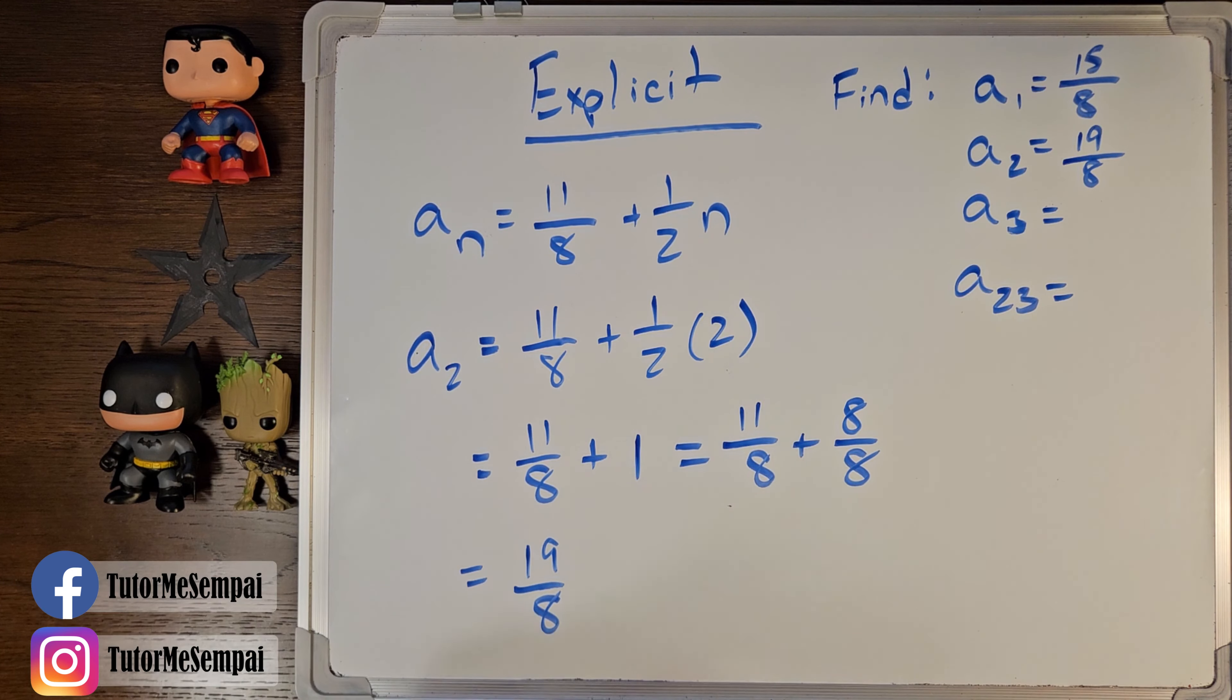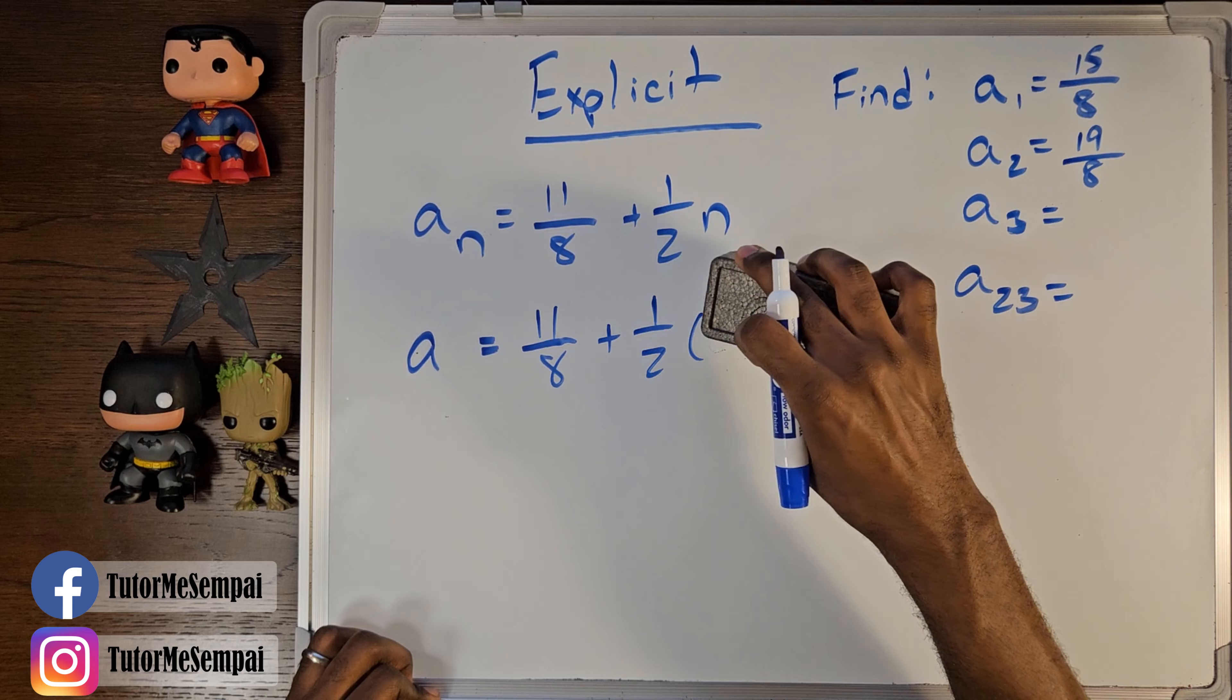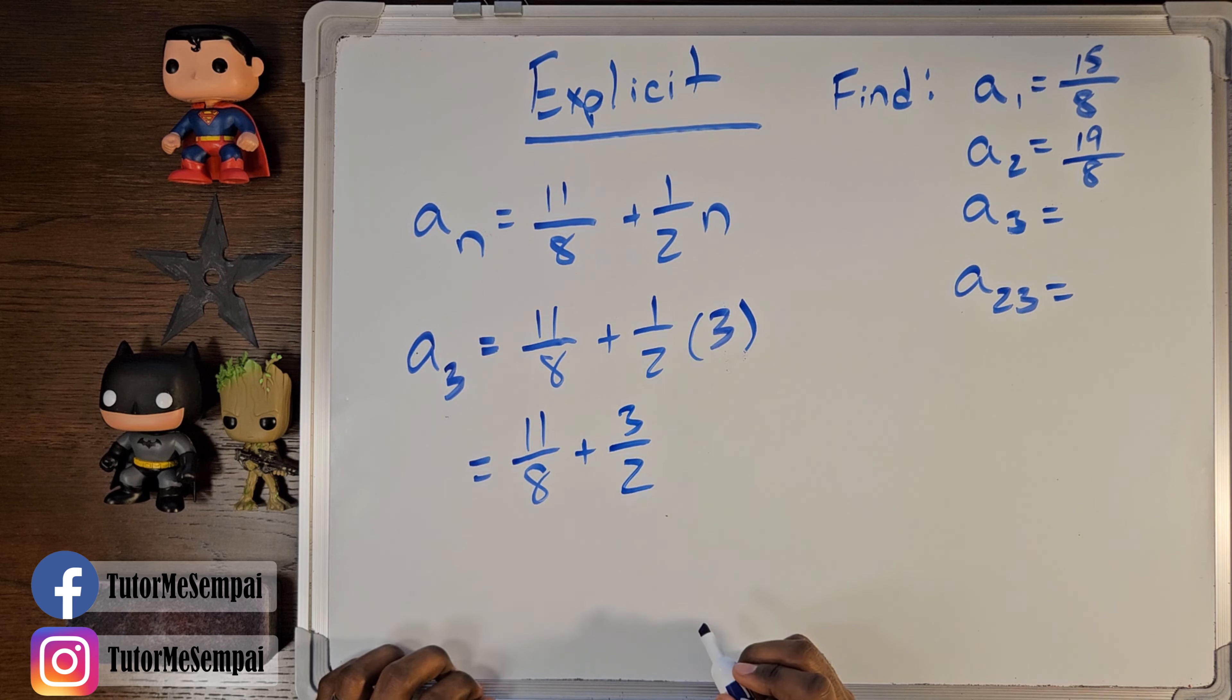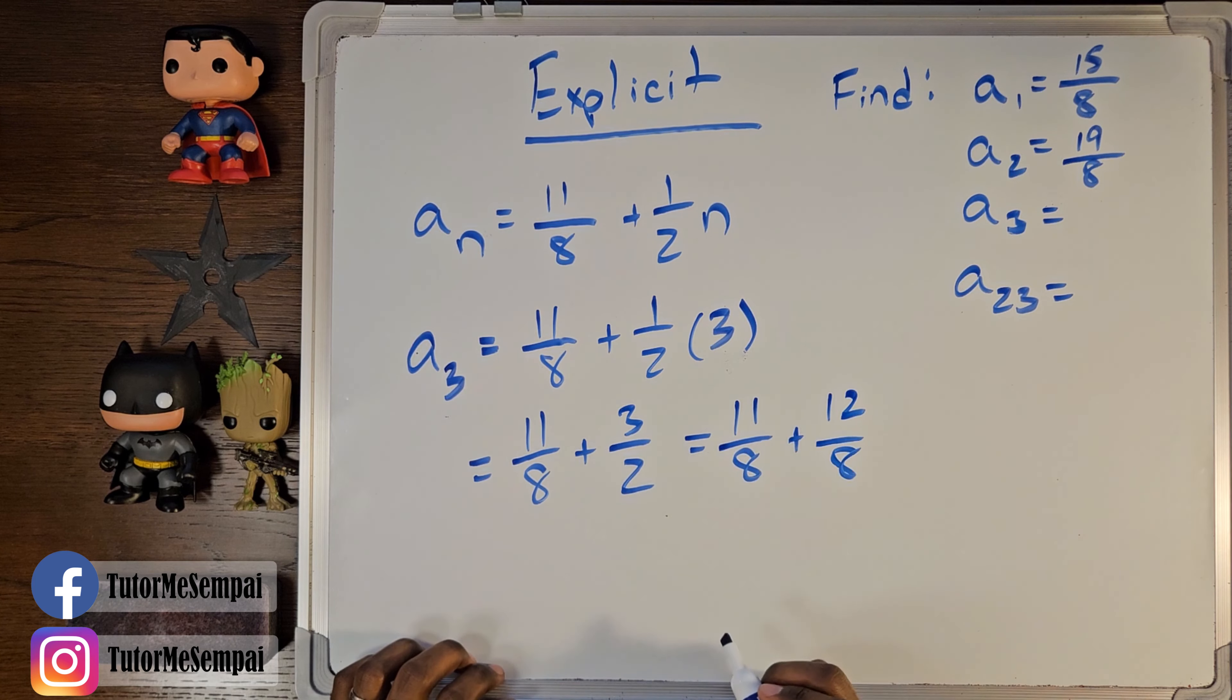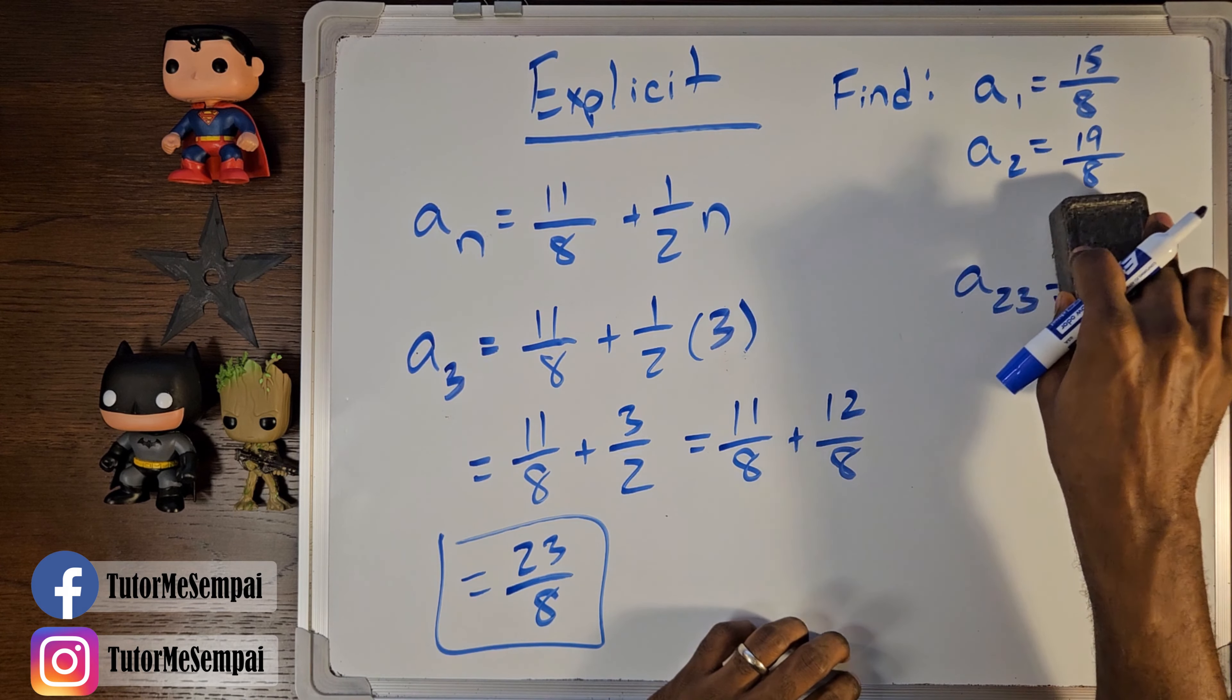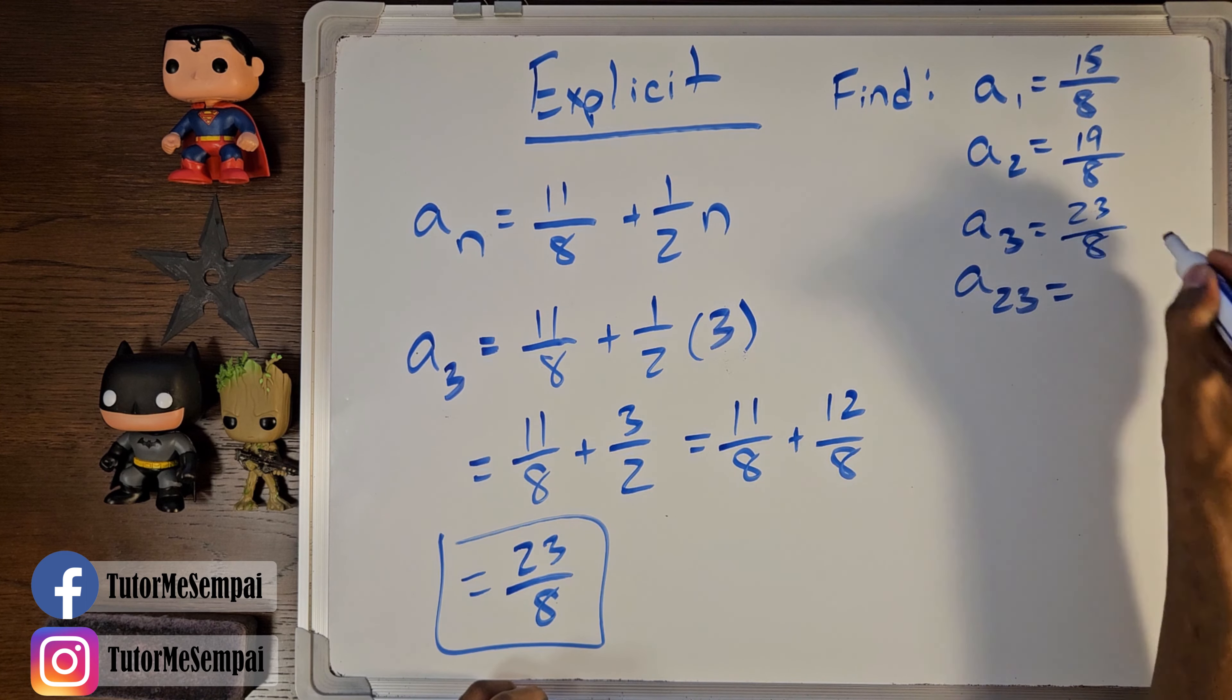Now, you should be getting the hang of this. What are we going to do for our a sub 3? Our a sub 3 is going to have a 3 everywhere there was a 2 or an n up here. So, a sub 3 is going to look like this. And when we simplify everything, we're going to have 11 over 8 plus 3 over 2. And this is going to be 11 over 8 plus 12 over 8. And you can combine that to be 23 over 8. Our final answer of 23 over 8.